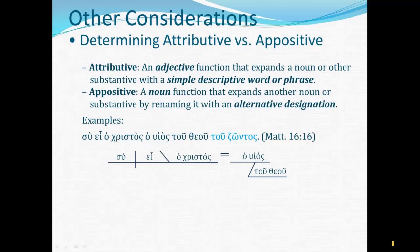What about 'the living' — tou zōntos? 'You are the Christ, the Son of God, the living one.' Would zōntos be a standalone designation for tou theou? 'You are the Christ, the Son of the living one' — that's really pretty good. But 'You are the Christ, the Son of the living God' as a simple attributive is pretty good too. This is one of those instances where either approach seems possible, but it seems more natural to take the simpler approach and take zōntos as an attributive telling what kind of God he is: 'You are the Son of the living God.' Okay, we are finished. Happy diagramming.